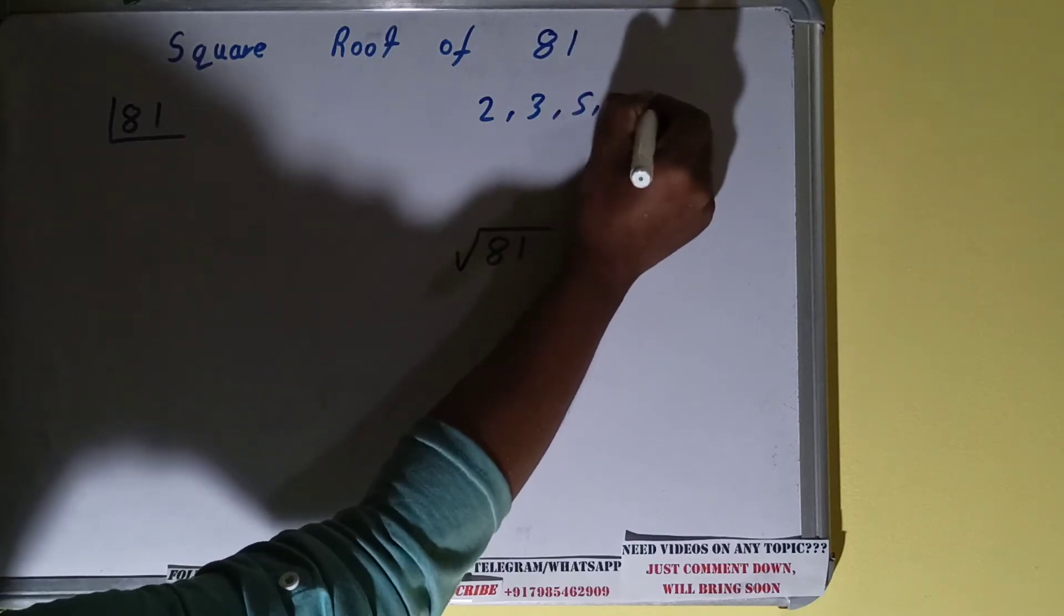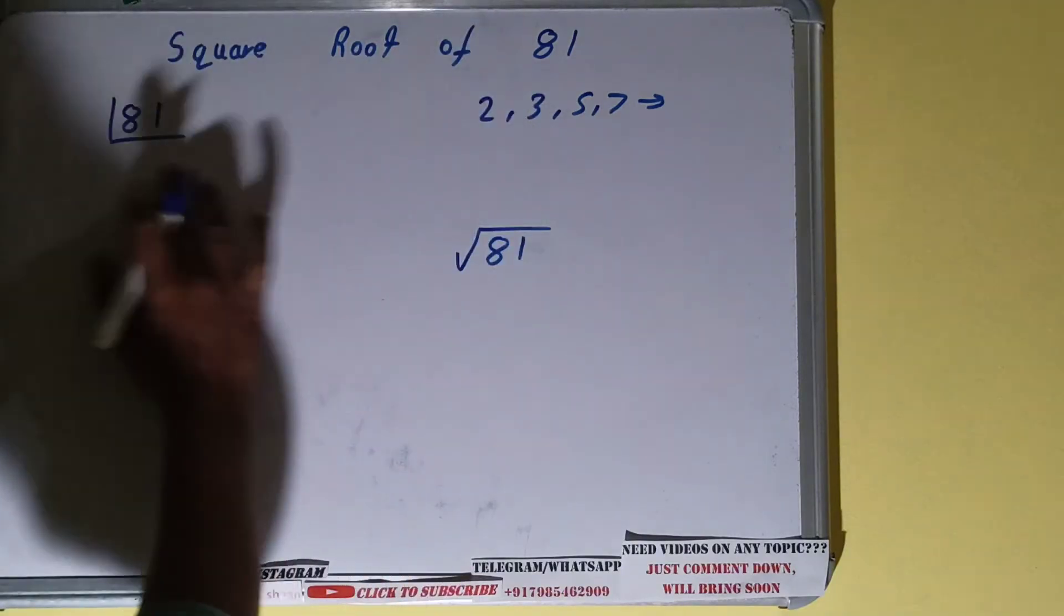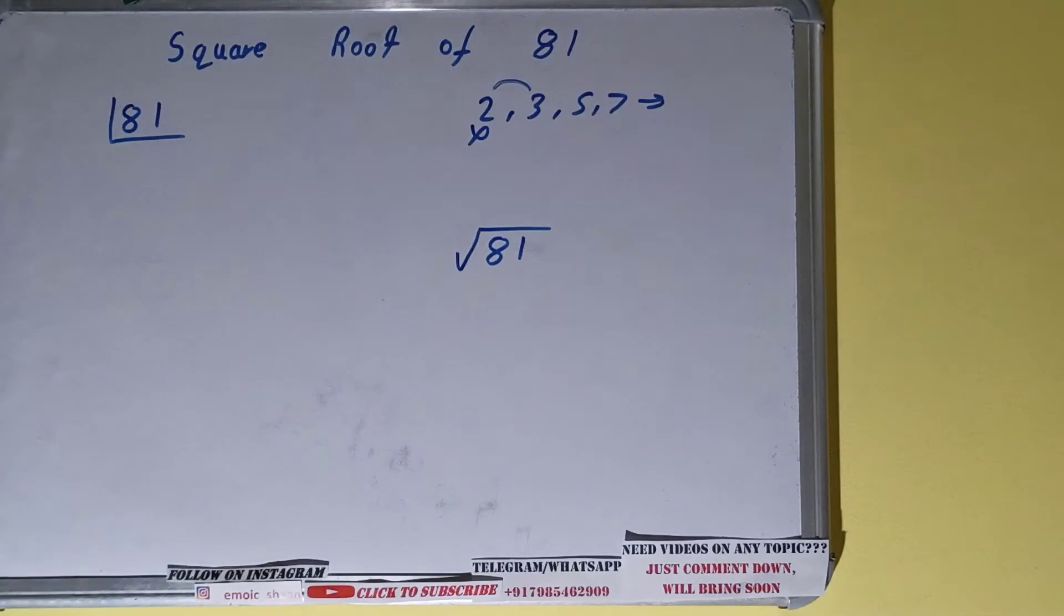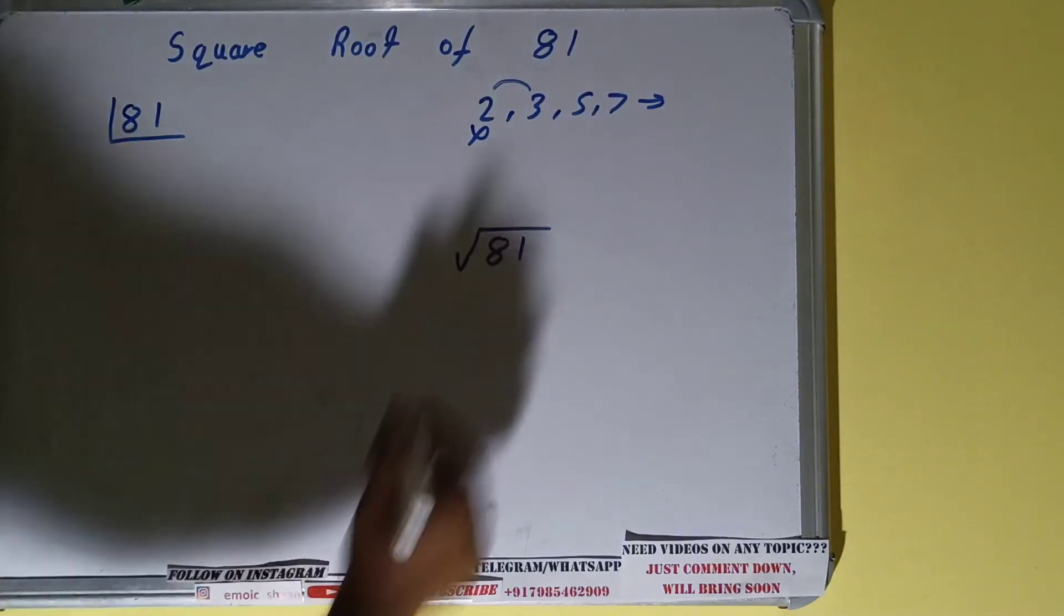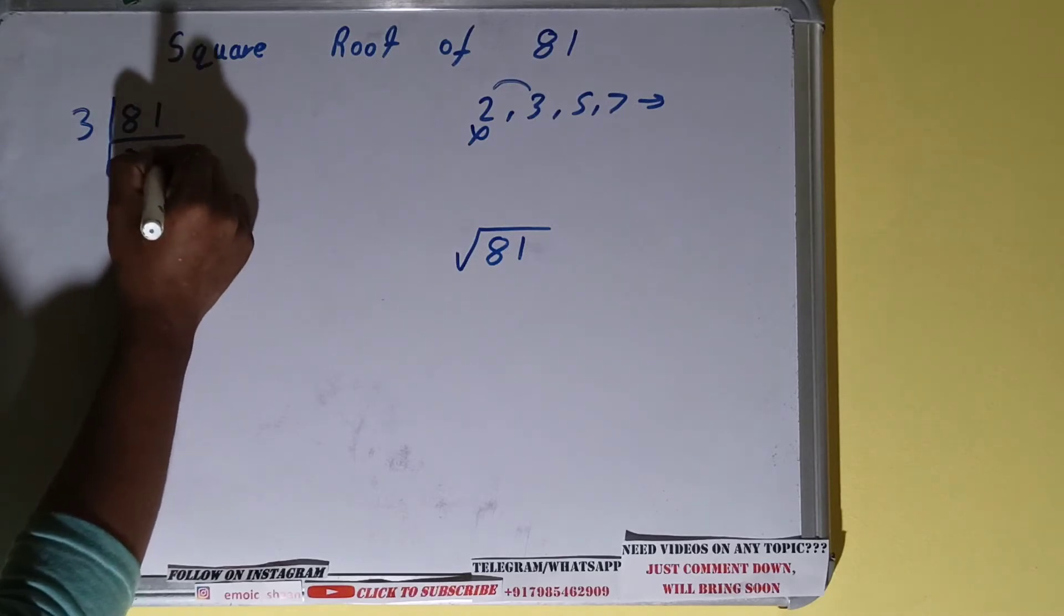So we will start with the lowest prime number, that is two. Is 81 divisible by two? No. So we'll go to the next lowest prime number, that is three. Is it divisible by three? Yes, it is. So let's divide, and we'll be left with 27.